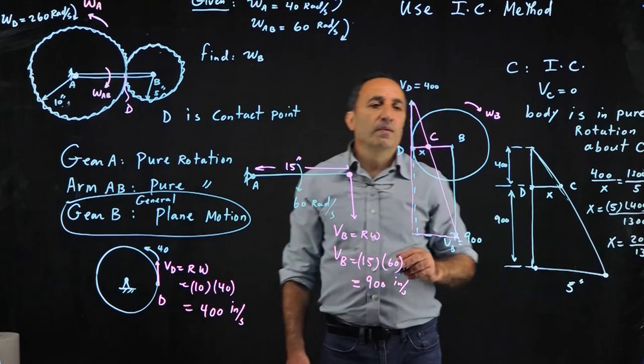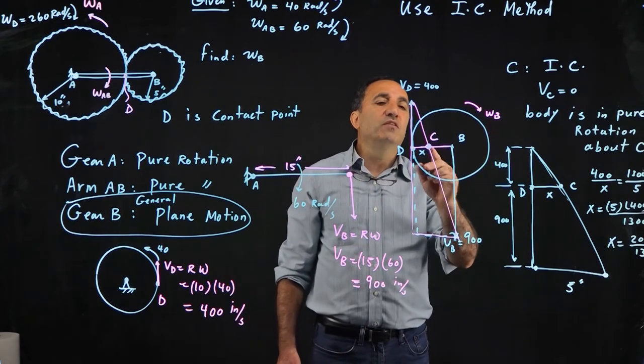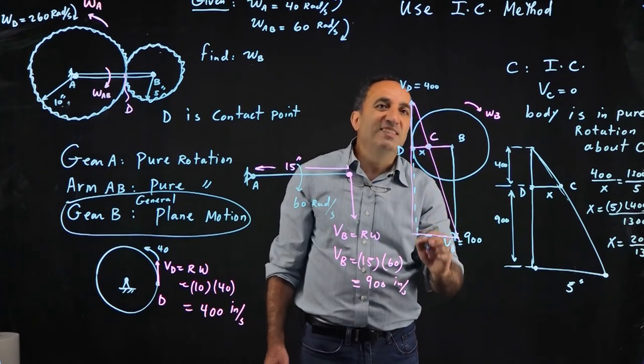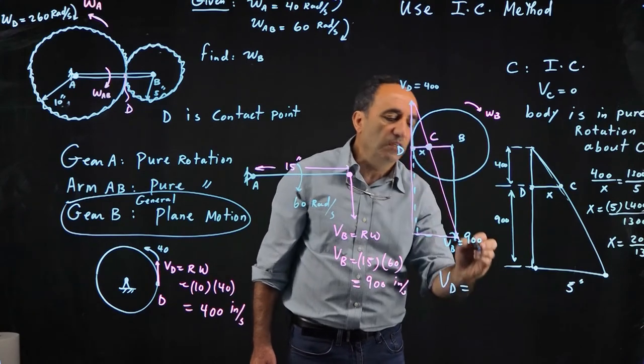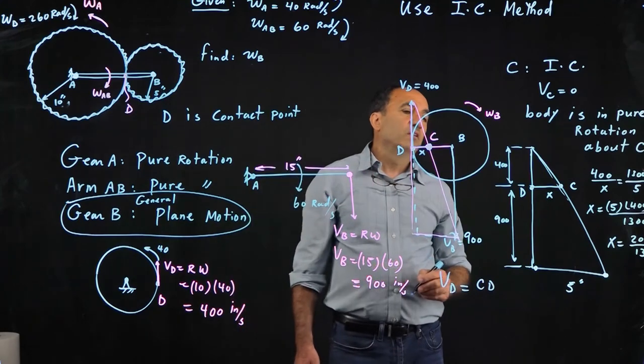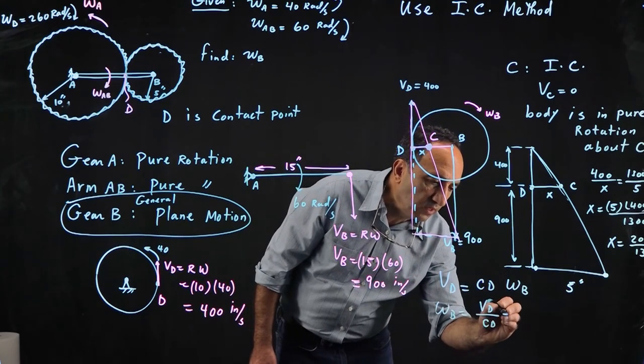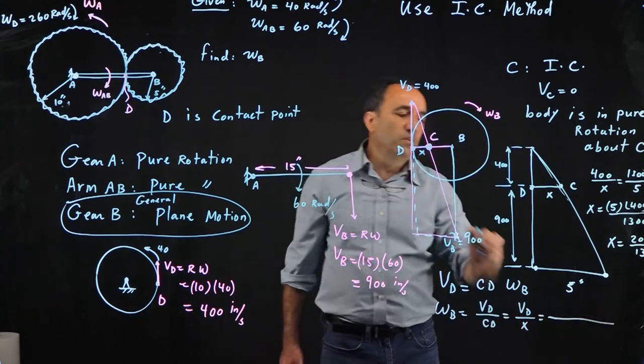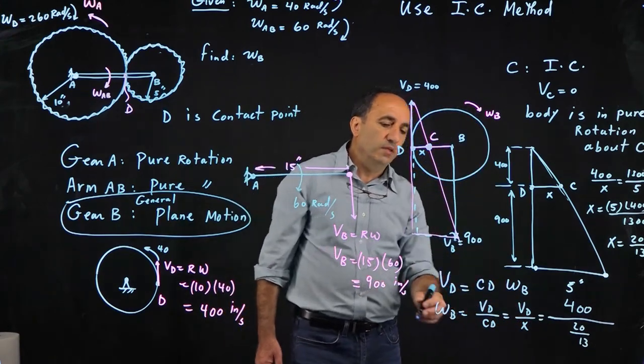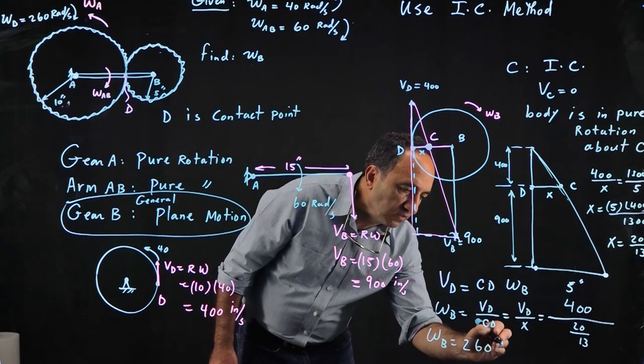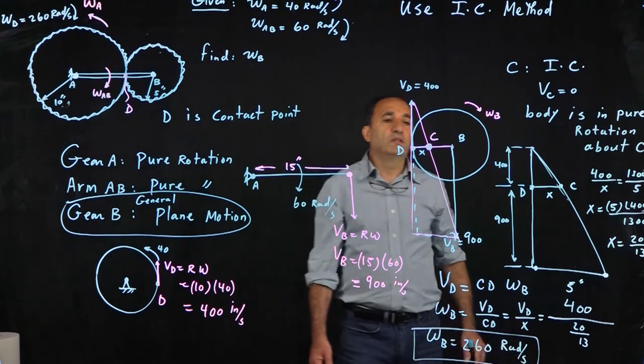Now, how am I going to use this X to find omega B? Once you find the instantaneous center, then since that body is in pure rotation about this point, velocity of D can be determined by using R times omega, pure rotation. R is from the center to point D, so that's CD, or X in our case. Times omega of B. Therefore, omega B becomes velocity of D divided by CD, or X. So velocity of D is 400 divided by X which is 20 over 13. I end up getting exactly 260 radians per second. And that's what I got based on the relative motion in the other video.